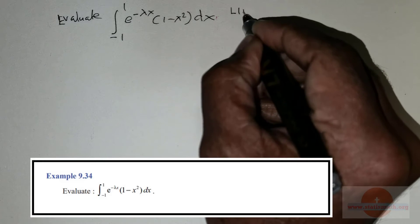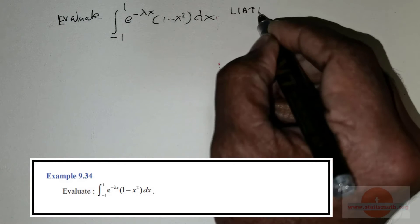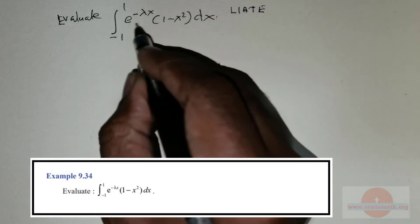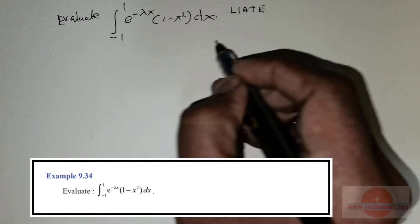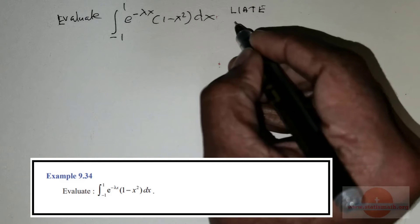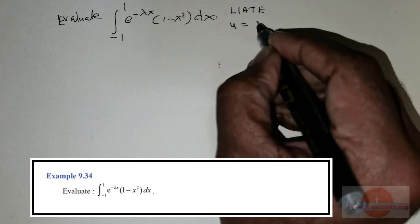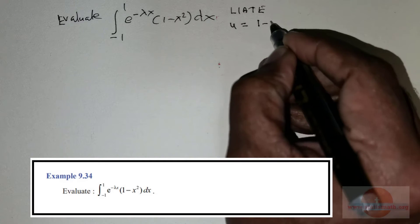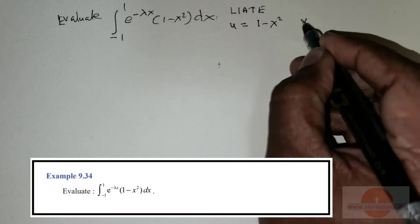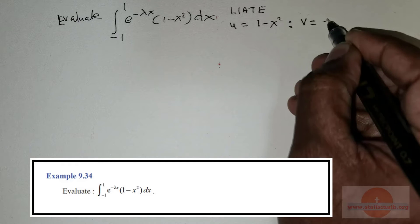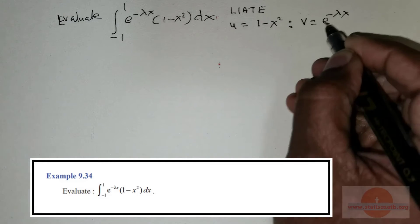To do this question, we will be using the LIATE rule. Clearly, the algebraic function comes before the exponential function. So therefore, we take the value of u to be 1 minus x squared, and v to be e raised to the power negative lambda x.